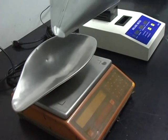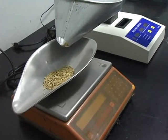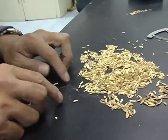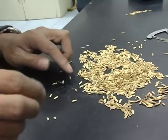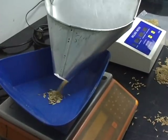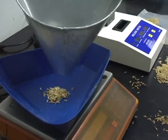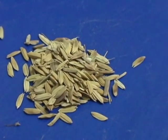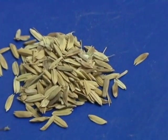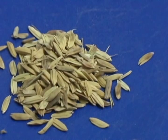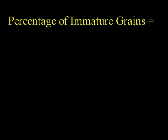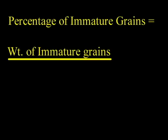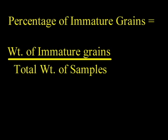First, select a 25-gram grain sample. Then select, segregate, and weigh the immature grains in the sample. Finally, calculate the percentage of immature grains using the formula: weight of the immature grains divided by the total weight of the sample, multiplied by 100.